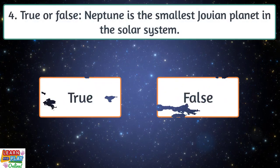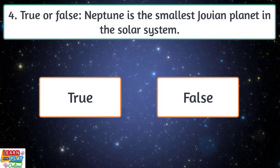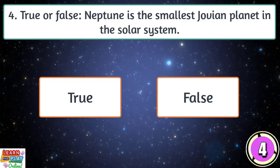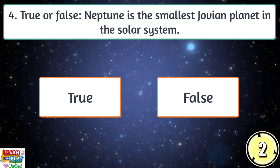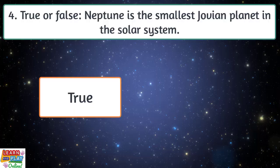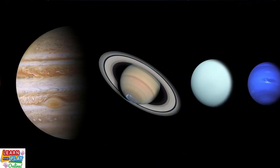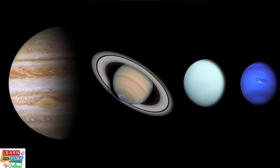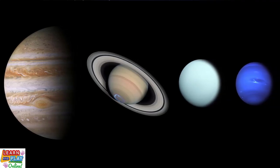Question four. True or false? Neptune is the smallest Jovian planet in the solar system. Jupiter, Saturn, Uranus, and Neptune are the Jovian planets in the solar system, and Neptune is the smallest out of them all.